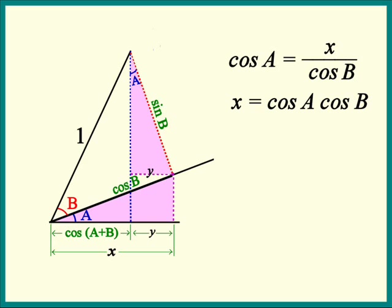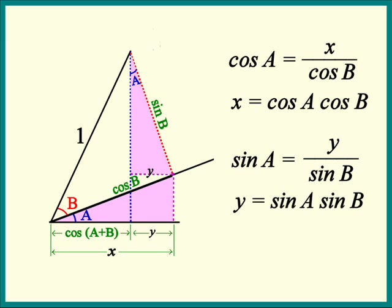Let's look at the pink triangle pointing up. y is the opposite side of angle a. That means we can try to use sine of a to find y. Sin of a is its opposite side y over the hypotenuse sine b. Cross multiplying, we find that y is sine of a times sine of b.